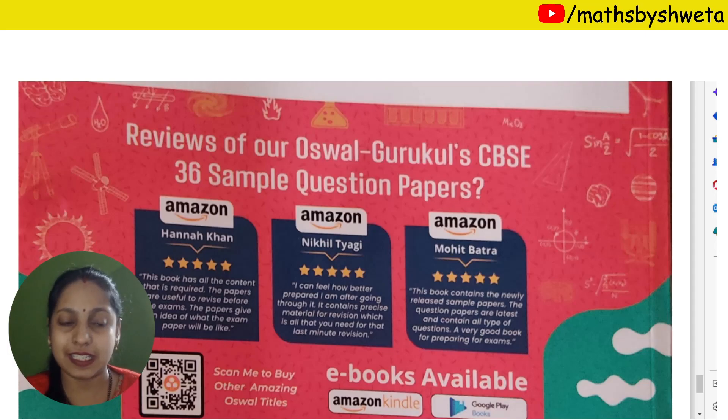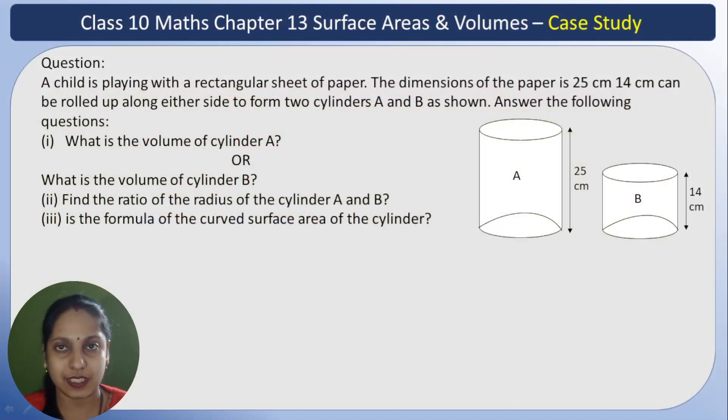Today's question - let's start the case study. What does it say? A child is playing with a rectangular sheet of paper. The dimensions of the paper are 25 cm by 14 cm, which can be rolled up along either side to form two cylinders A and B. Answer the following questions.